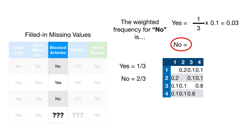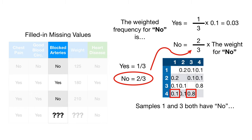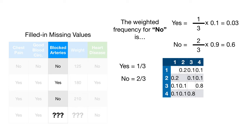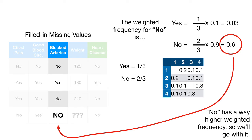The weighted frequency for no is the frequency of no, which is two-thirds, times the weight for no. Samples one and three both have no. With that in mind, we can plug in the values for the proximity of no divided by all proximities. Thus, the weight for no is 0.9. And the weighted frequency for no is 0.6. No has a way higher weighted frequency, so we'll go with it. In other words, our new, improved, and revised guess based on the proximities is no for blocked arteries.